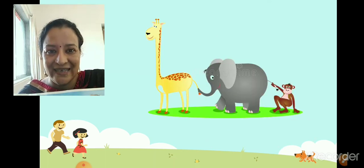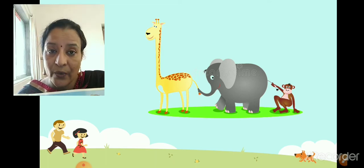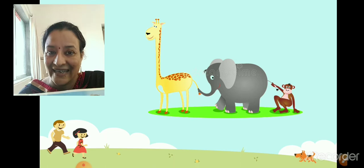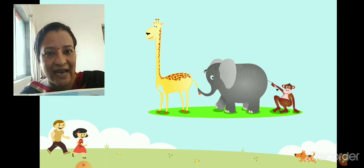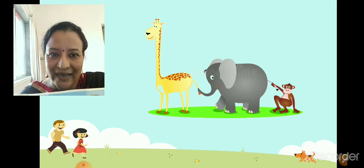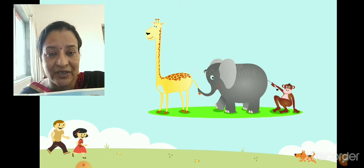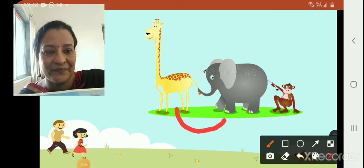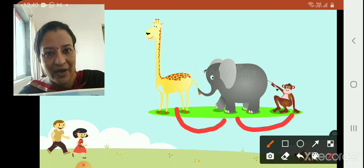Now here children, you can see three animals here, isn't it? You can see a giraffe, elephant and monkey. Can you tell me who is standing after the giraffe? Point out and tell me. Correct. An elephant is standing after the giraffe. Now, who is standing after the elephant? Monkey. Correct. Monkey is standing after the elephant.